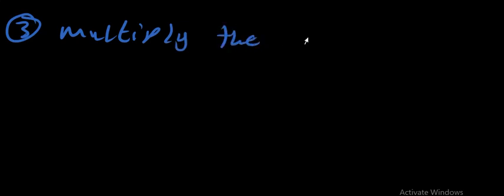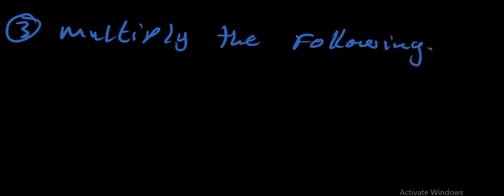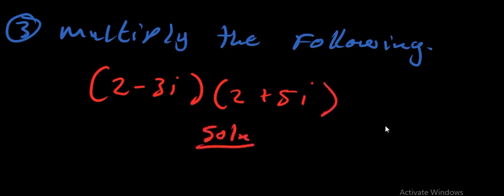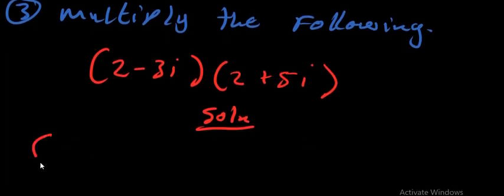Example three: multiply the following complex numbers. Please make sure that you subscribe to our YouTube channel and follow our classes. The question is (2 − 3i) × (2 + 5i). Let me write the solution — we are simply going to write the same expression: (2 − 3i)(2 + 5i).